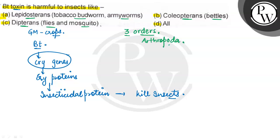And there are three groups of insects which the BT toxin — which we are talking about as cry protein, a proteinaceous substance — affects. So BT toxin is harmful to all the insects. I hope you have understood it well. All the best.